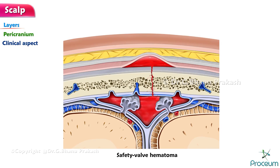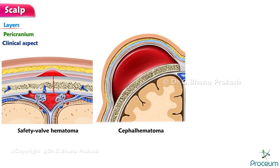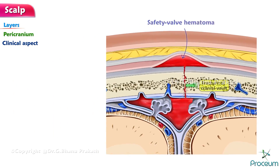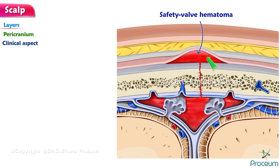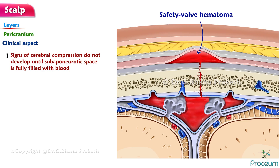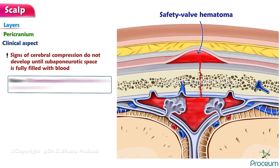Clinical Aspect — Safety Valve Hematoma, Cephalhematoma, and Caput Succidaneum: Fracture of the cranial vault in children may be associated with tearing of the dura mater and pericranium. In such cases, blood from intracranial hemorrhage communicates with the subaponeurotic space of the scalp through the fracture lines. The signs of cerebral compression do not develop until the subaponeurotic space is fully filled with blood — for this reason the collection is called a safety valve hematoma. If cerebrospinal fluid collects in the subaponeurotic space, the condition is called cephalhydrocele.